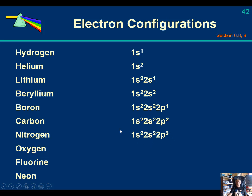Here's nitrogen, our first half-filled, very stable electron configuration, 1s2 2s2 2p3, and then oxygen, 1s2 2s2 2p4.